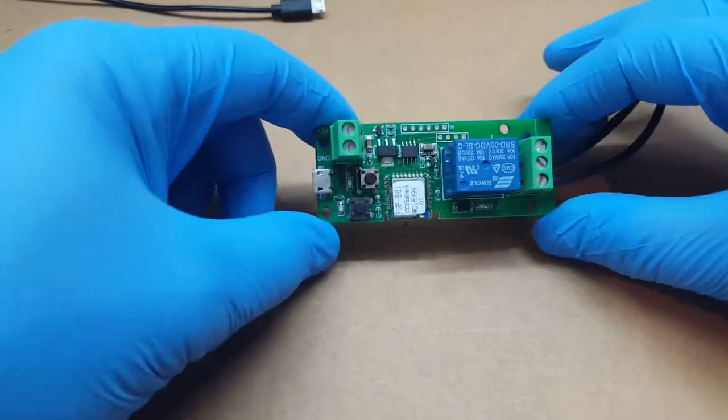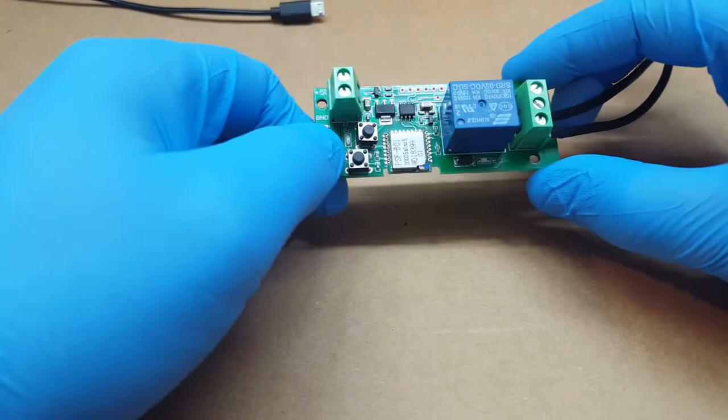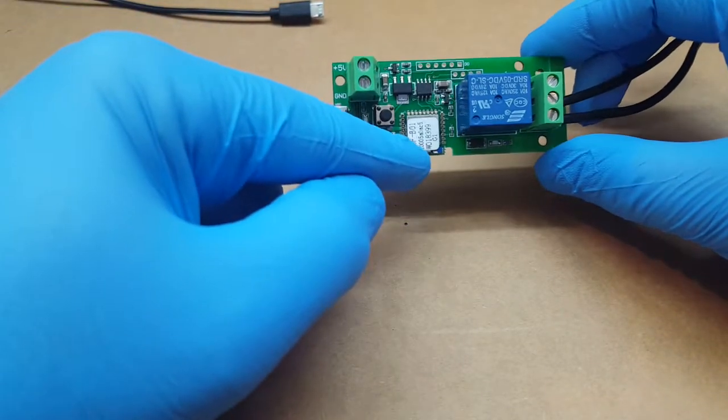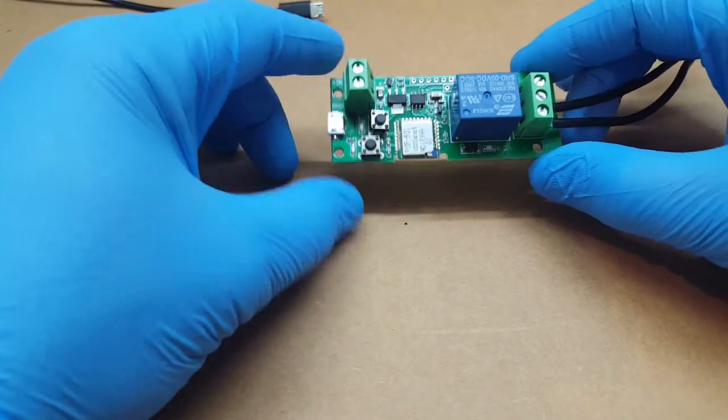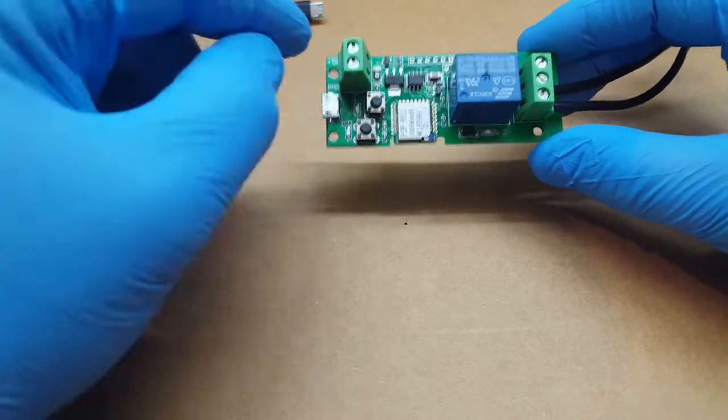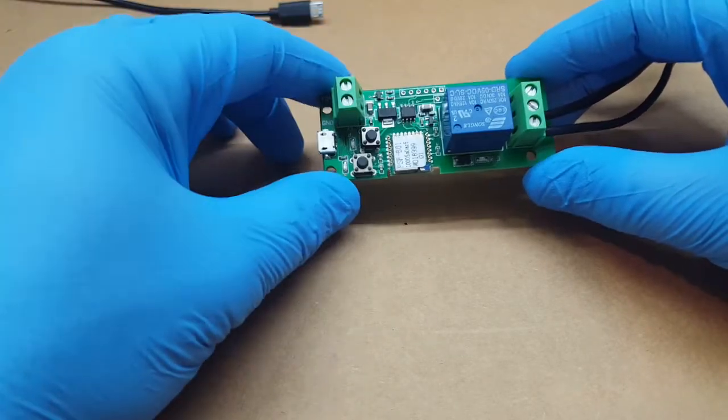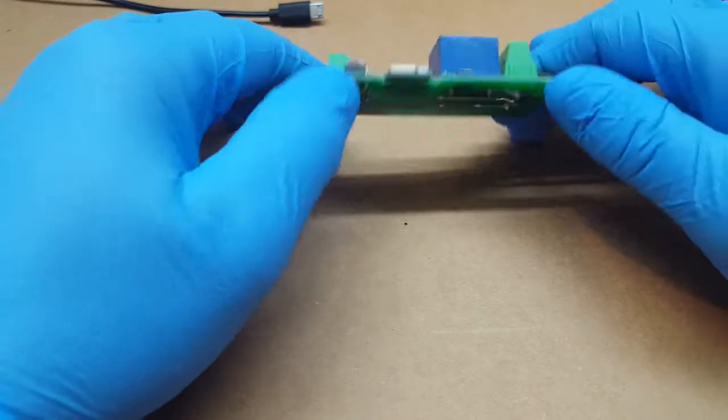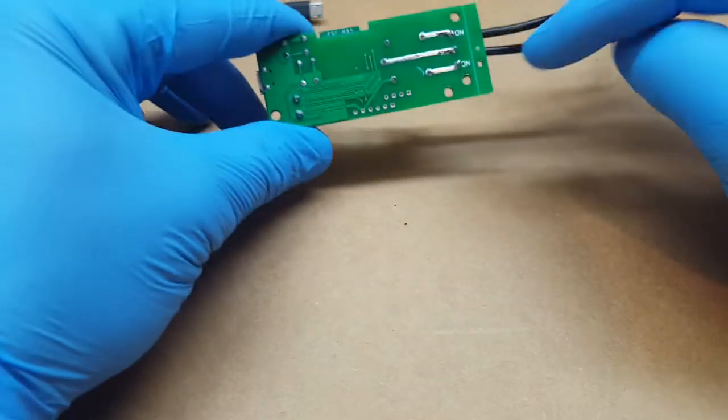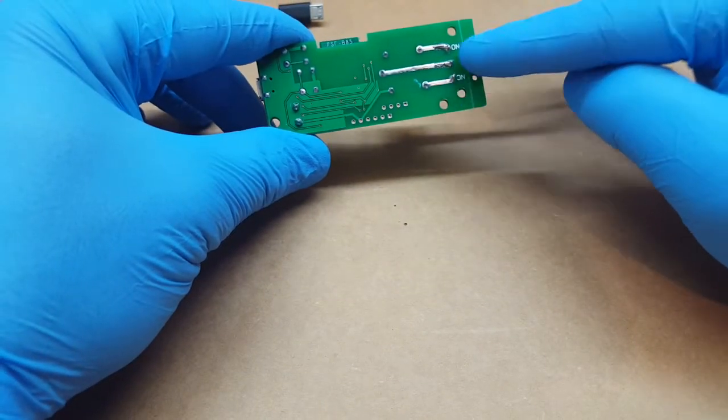Alright, Fuzz Pie Guy here. I had some questions about my smart relay here that has a WiFi ESP on it. You can pick these up online. You've got your common, normally closed, normally open connections.